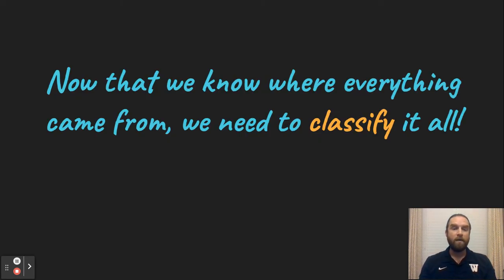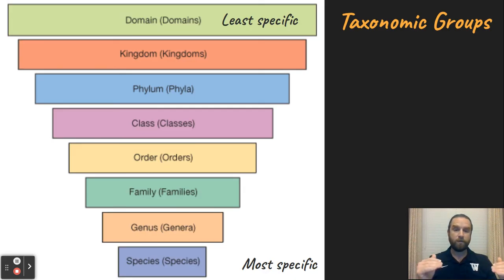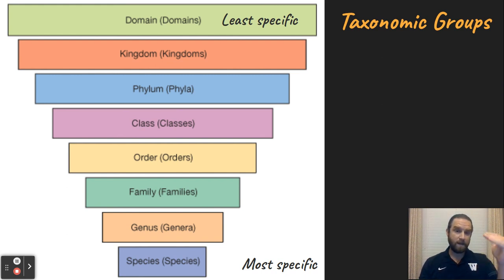Now that we know where everything came from, we need to classify it all by looking at taxonomic groups from domain all the way through species. Domain is the most broad, and species at the bottom is the most specific. One way to remember domain, kingdom, phylum, class, order, family, genus, species is: 'Dumb kids playing cars on freeways get smashed.'